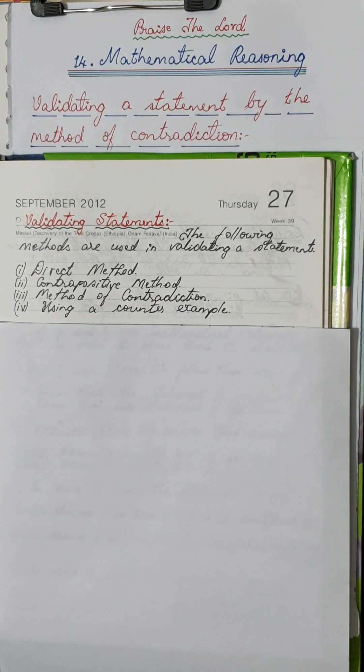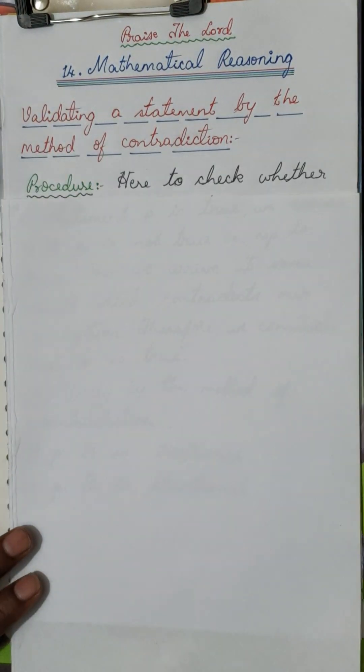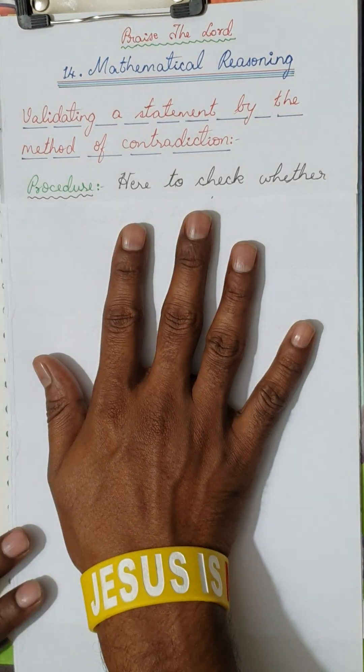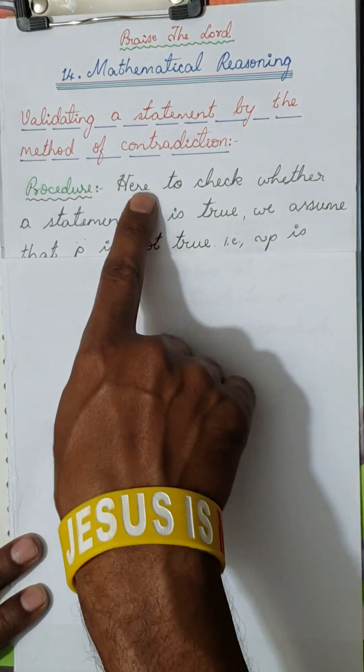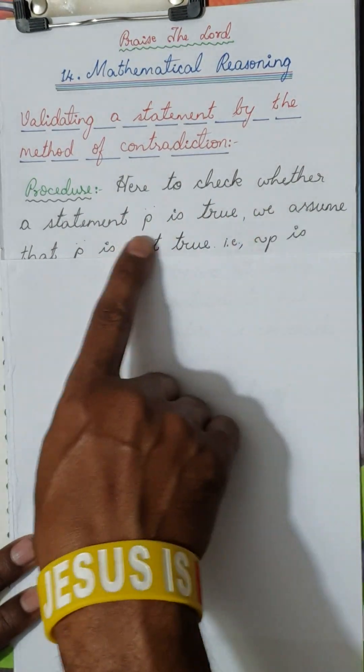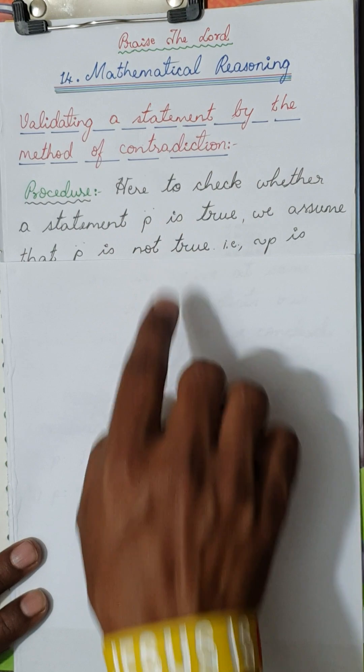I am just going to explain one example, and only one problem is solved in this video. So, here comes the theory of validating a statement by the method of contradiction. It is a very simple procedure. So, what is the procedure? Here, to check whether the statement P is true,